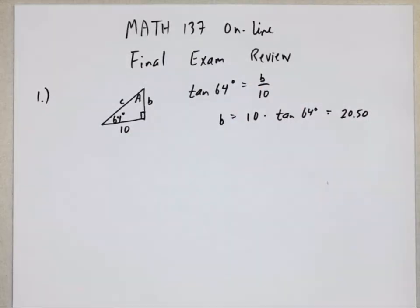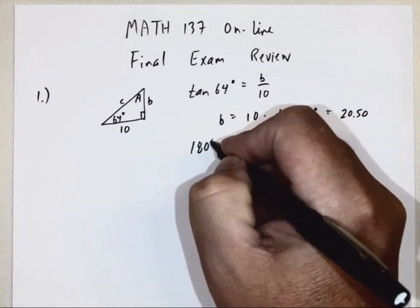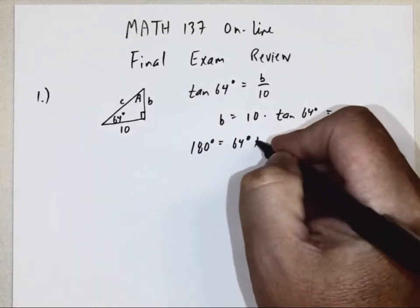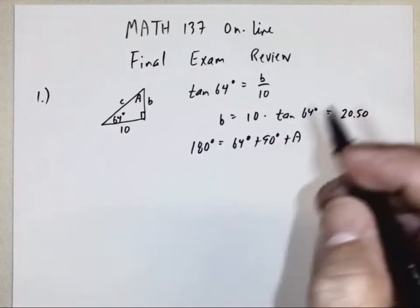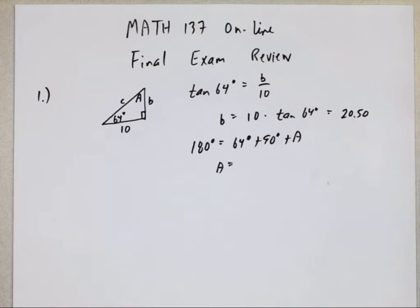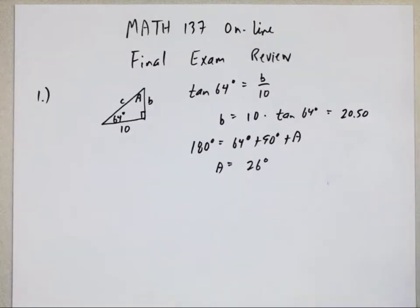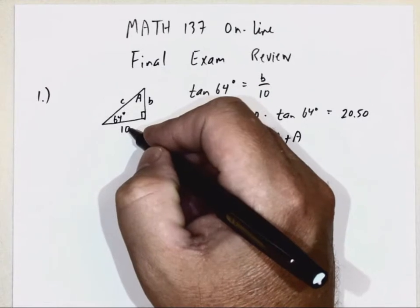Since it's a right triangle, I know this is 90 degrees, this is 64. Three triangles always add up to be 180. All right, 64 degrees plus 90 degrees plus angle A. So if I take 180 minus 64 minus 90. I could do this in my head, but I don't want to mess up on this video. So I'll use my calculator.